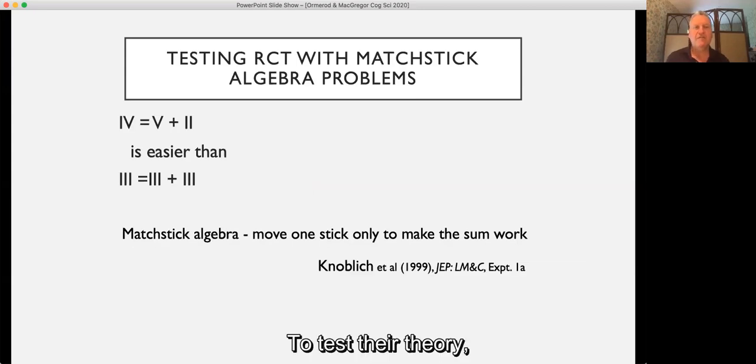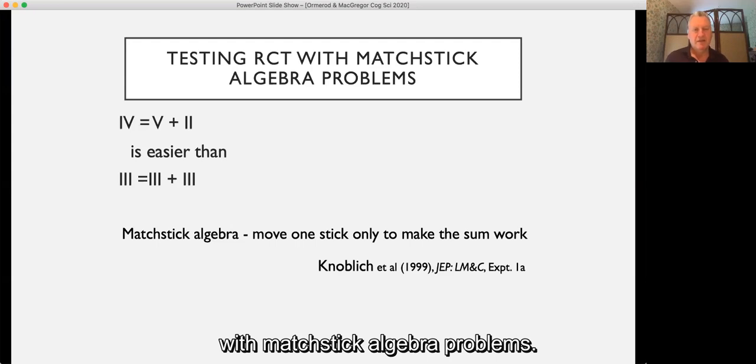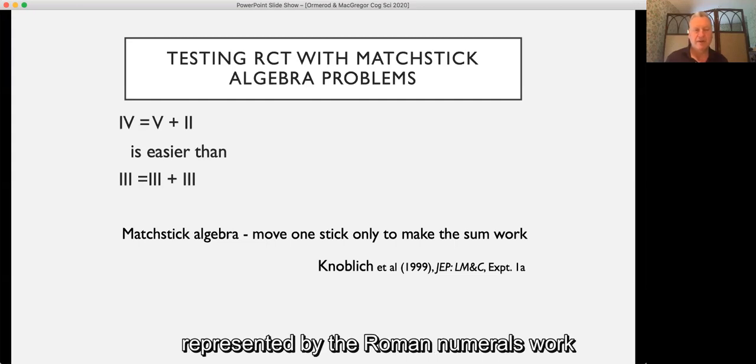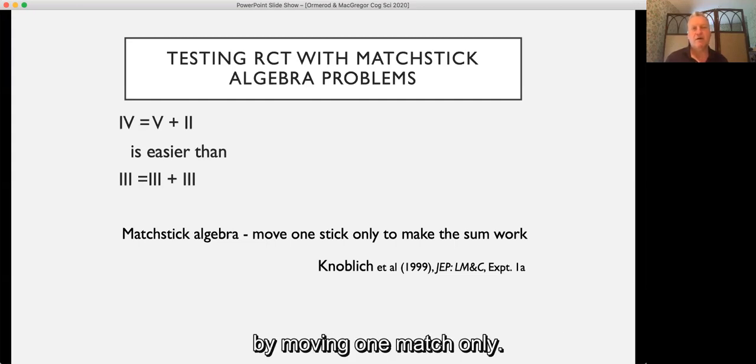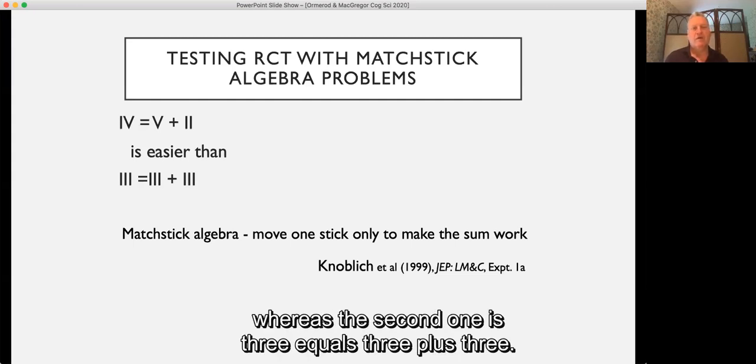To test their theory they conducted a number of innovative experiments with matchstick algebra problems. In a matchstick algebra problem, the task is to make the arithmetic sum represented by the Roman numerals work by moving one match only. In the first sum you have IV = V + II, whereas the second one is III = III + III.